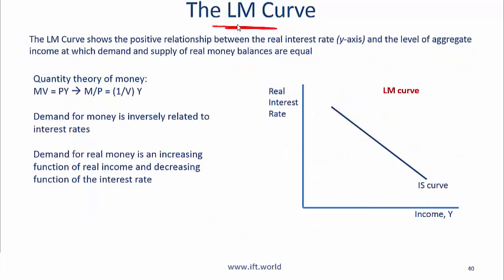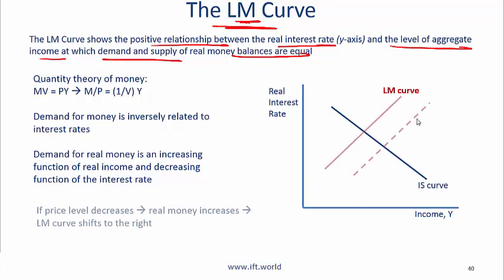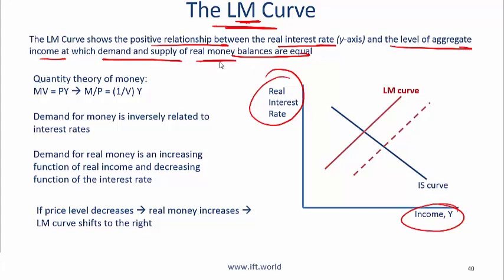The LM curve: the M here stands for money. The LM curve shows a positive relationship between real interest rates and the level of aggregate income. The condition that must hold is that the money market is in equilibrium — meaning demand and supply of real money balances are equal. The LM curve is upward sloping, showing a positive relationship between real interest rate and income given that real money supply equals real money demand.